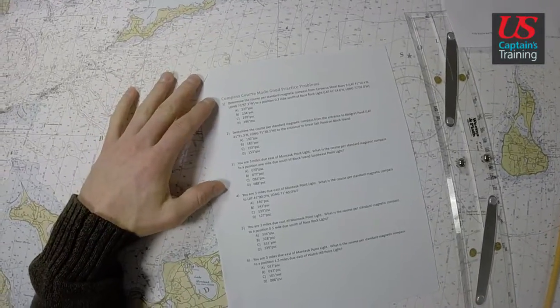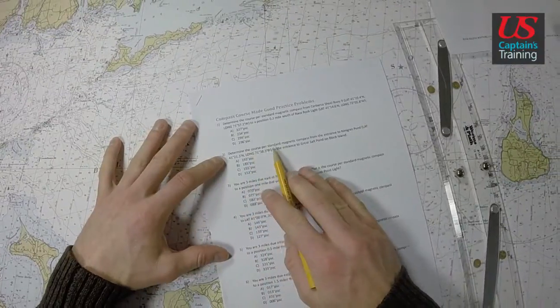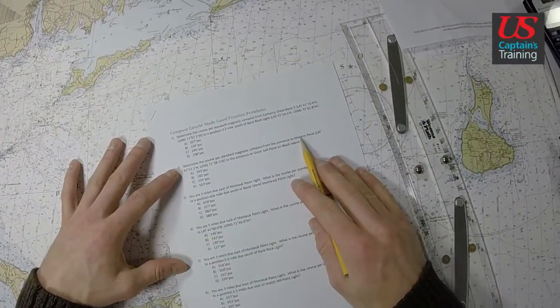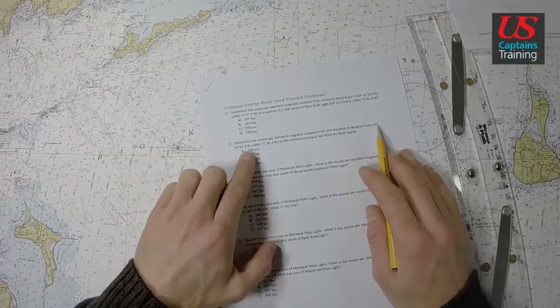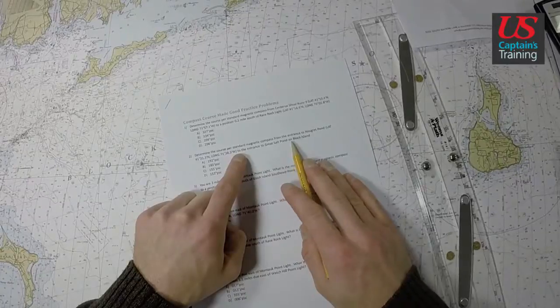Compass course made good practice problem 2: determine the course per standard magnetic compass from the entrance to Ninigret Pond with a given latitude and longitude, which is approximate to the entrance to Great Salt Pond on Block Island.